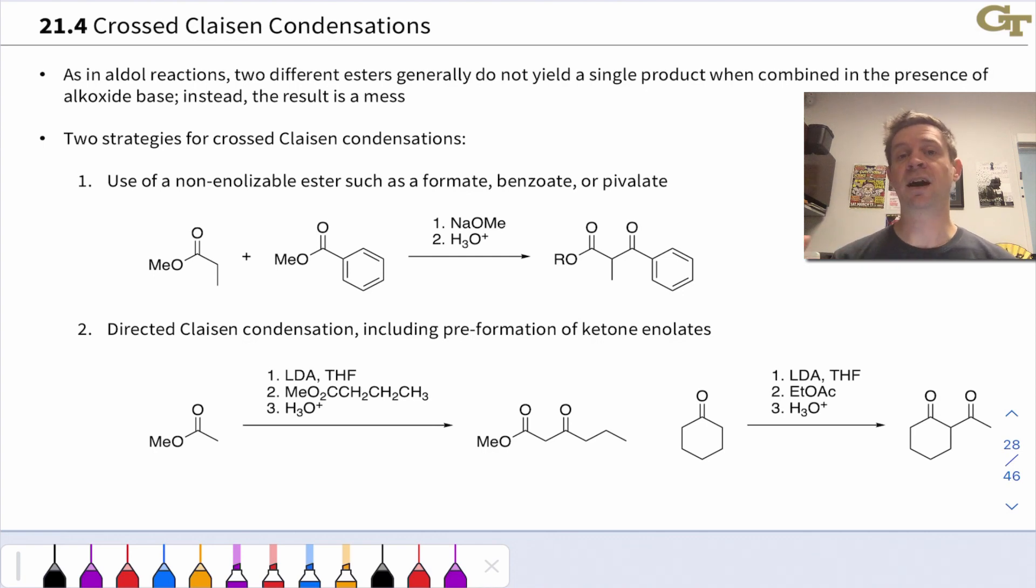The first strategy involves using a non-enolizable ester that cannot form an enolate. This means that that ester will necessarily act as the electrophile. So for example, a benzoate is shown here with a benzene group connected to the carboxyl group. And notice that with this alkoxy group on the other side, we have no alpha hydrogens over there. So we really just need to pay attention to the only alpha carbon in the ester. In esters, there is only one alpha carbon. So in this example, this ester with the alpha carbon bearing two alpha hydrogens will be the nucleophile. Necessarily, the methylbenzoate will be the electrophile. And the product will involve acylation of this alkyl alcanoate ester.